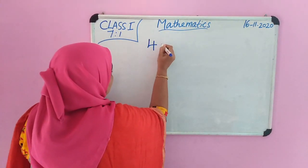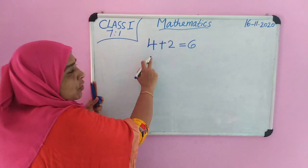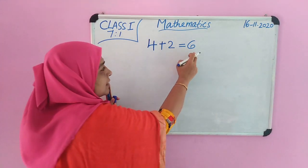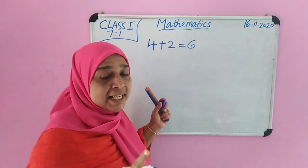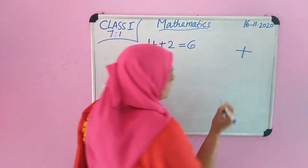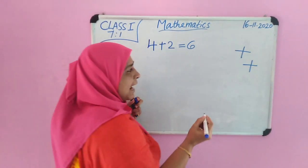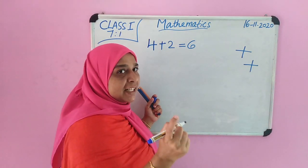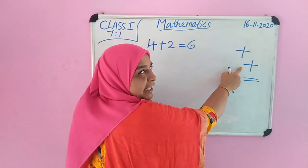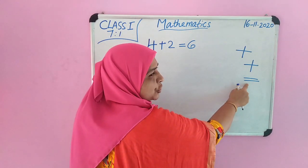4 plus 2 equals 6. 4 and 2 more makes 6. We represent plus as this. And we represent equal to as this. The sign for addition is plus. We represent equal to this.